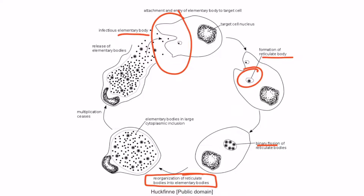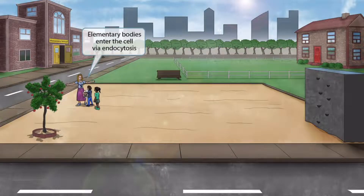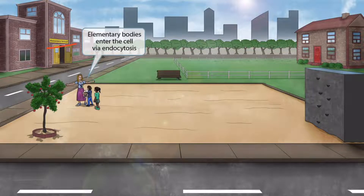Now let's return to the image to help you memorize these facts. The teacher is about to hug the elementary school kids, and they go inside of the elementary school, which is labeled right behind the teacher. The hug represents endocytosis, and the elementary school kids represent elementary bodies — so elementary bodies enter the cell via endocytosis.